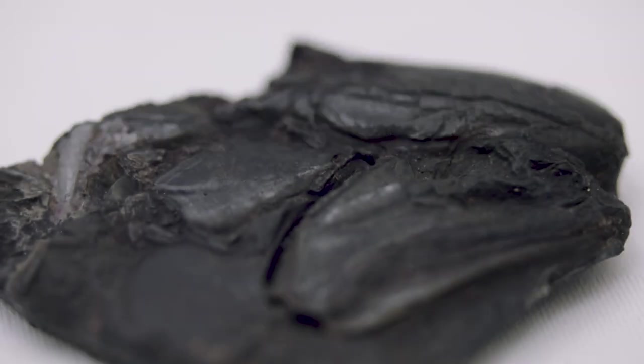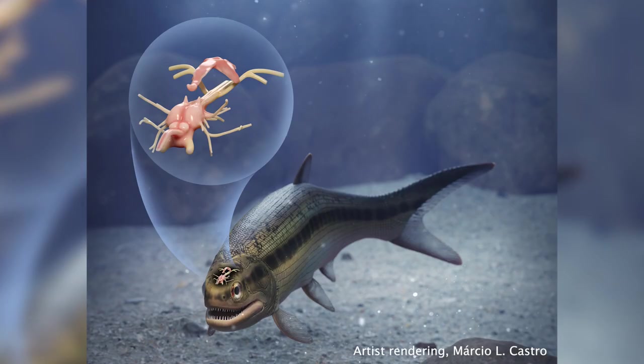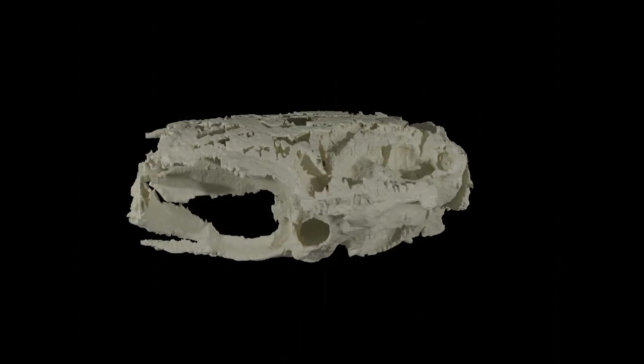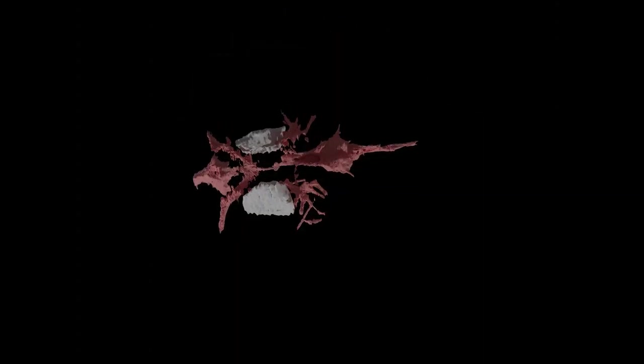Most of the time when you think about fossils you think about the preservation of hard parts, things like bones, teeth, shells. But sometimes on rare occasions we find the preservation of the soft parts, and in this case we have the remains of a brain and the associated nerves inside the skull of this ancient fossil fish.